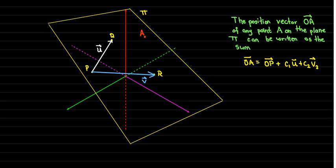If I want to find the position vector of another point A which lies on the plane, how can I get to point A? First I have to go to the point P, and then I should be able to use a linear combination of U and V to get to point A.